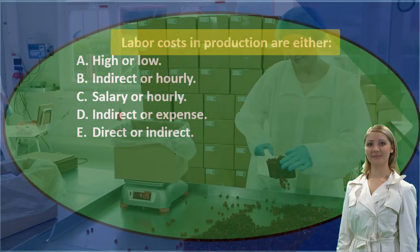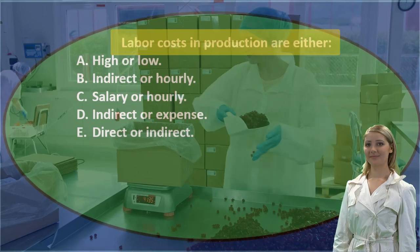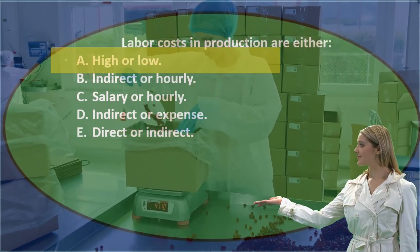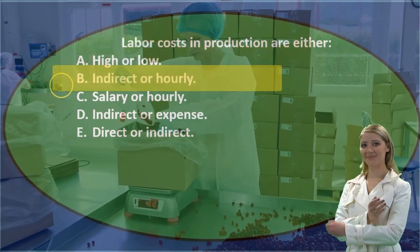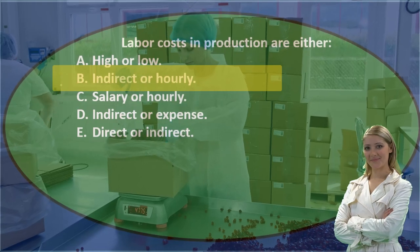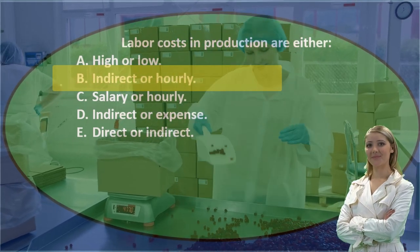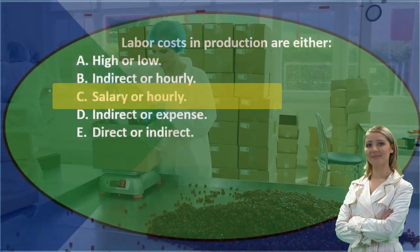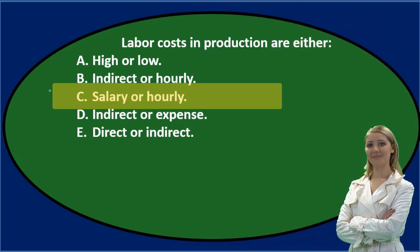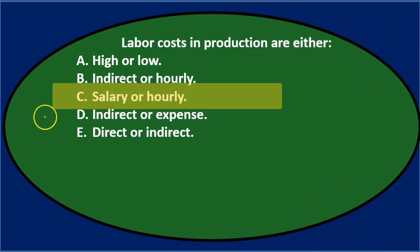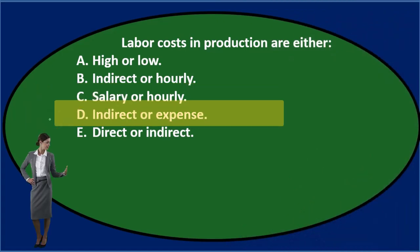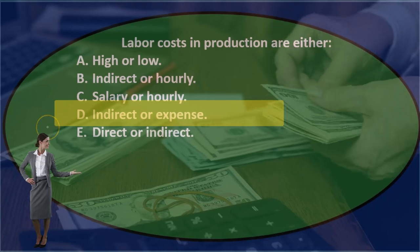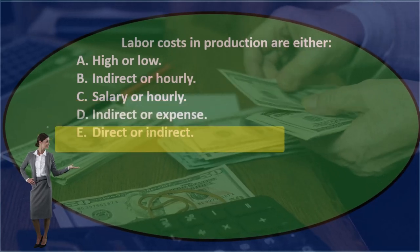Labor costs in production are either A, high or low; B, indirect or hourly; C, salary or hourly; D, indirect or expense; or E, direct or indirect.